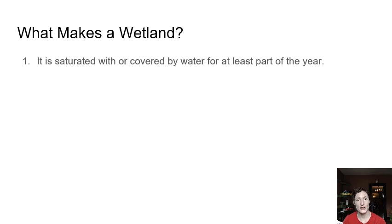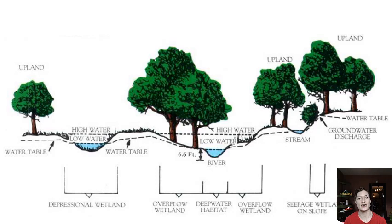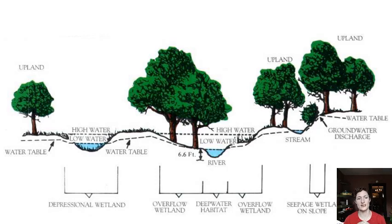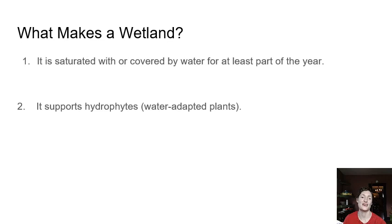So what makes a wetland? First, it's saturated or covered by water for at least part of the year — the water table is at or above the surface of the ground at least seasonally. Wetlands can be seasonal; they don't have to be wet year round. Looking at a cross-section again, you can see low water — the water table level in the dry season — and high water, the level in the wet season. Anywhere the high water would be covering is still considered a wetland even in the dry season, because it's at least seasonally wet. So the definitions of wetlands are a little redundant: the first characteristic is that it's wet, and the second is that it has plants that like to be wet.